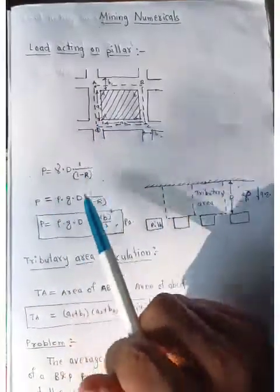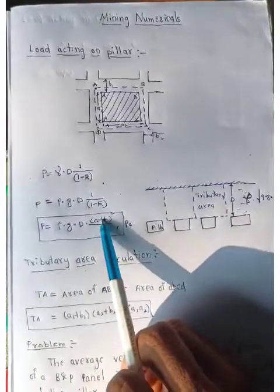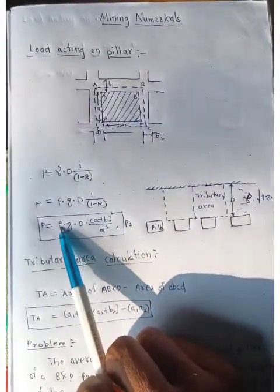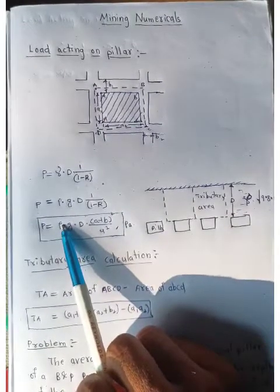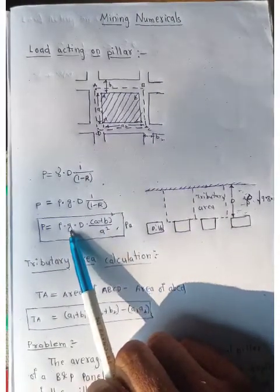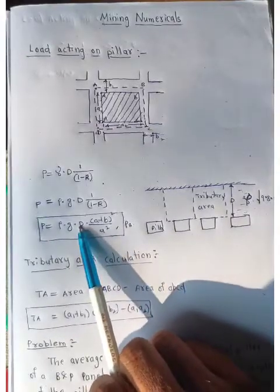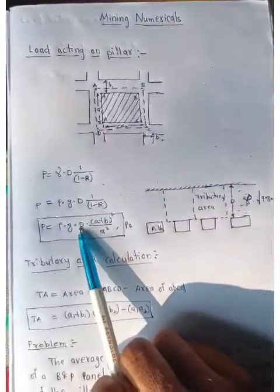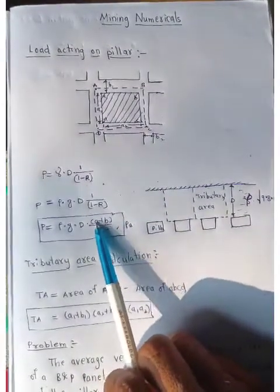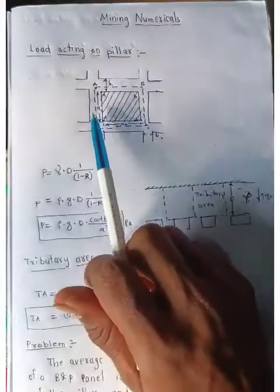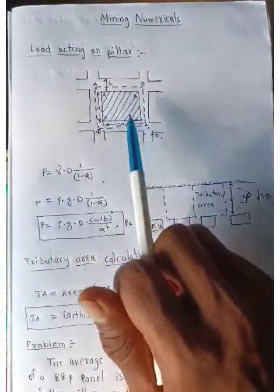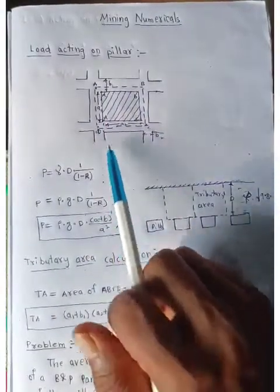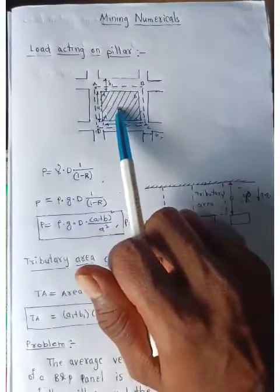The load acting on pillar can be calculated from the formula: rho × g × d × (a + b)² / a². Here, rho indicates the density of the superincumbent rock, g represents gravity, and d represents the depth, which is the overburden distance between the pillars and the surface. The term (a + b)² represents the center-to-center distance squared, and a² represents the area of the solid pillar.